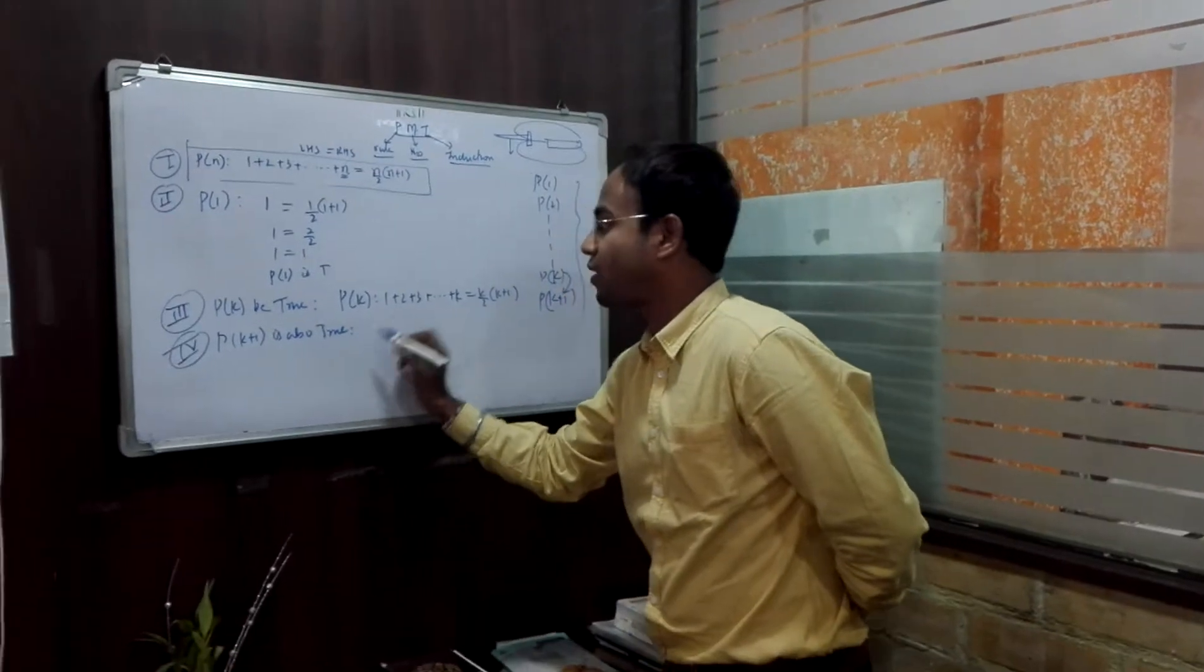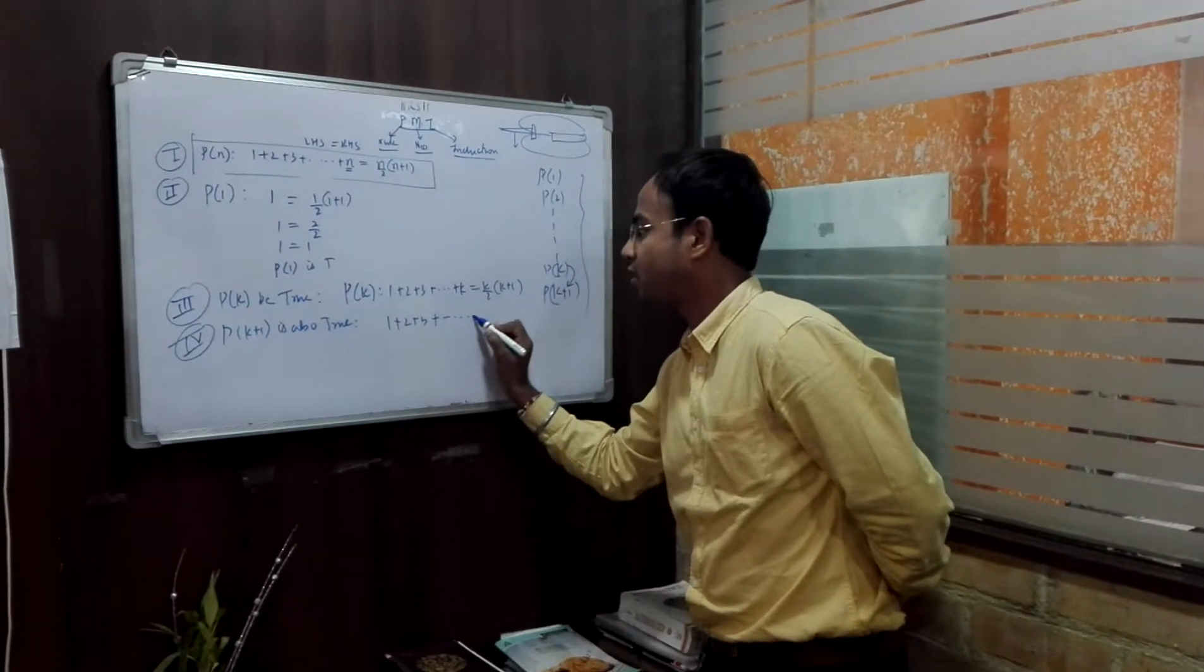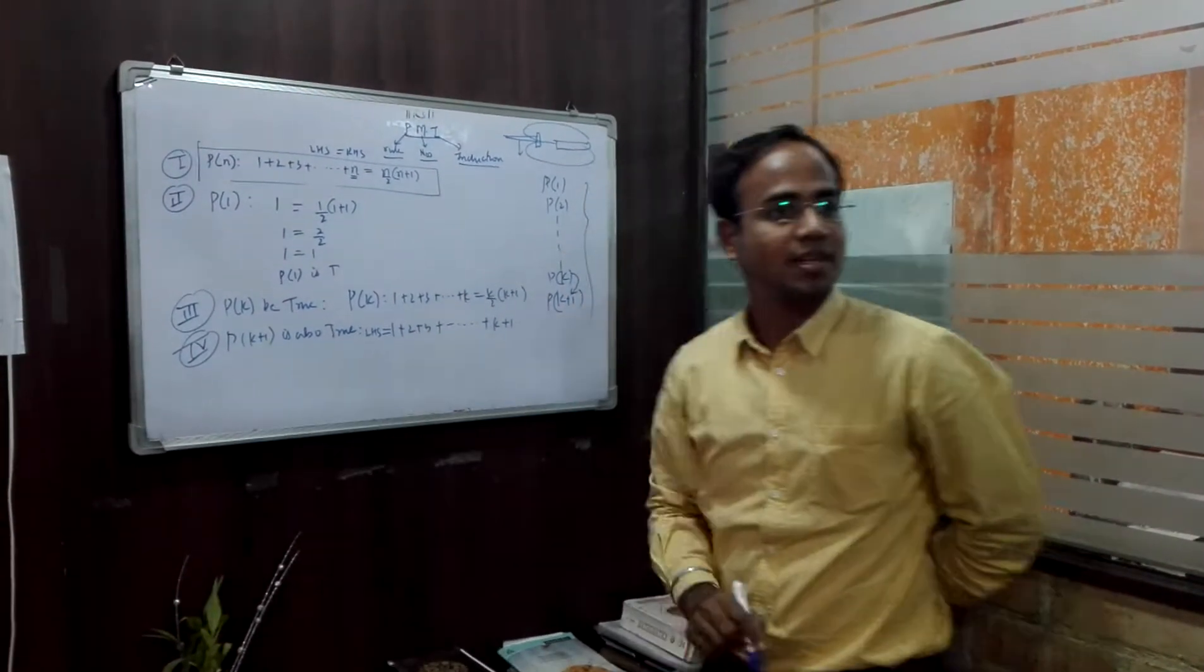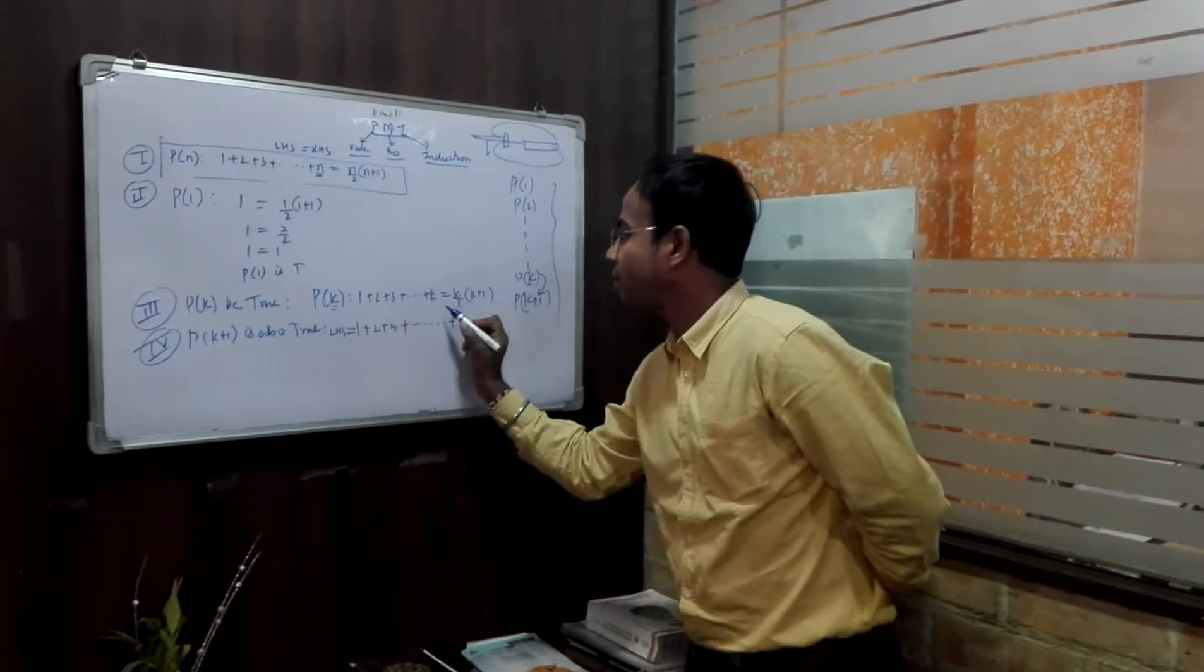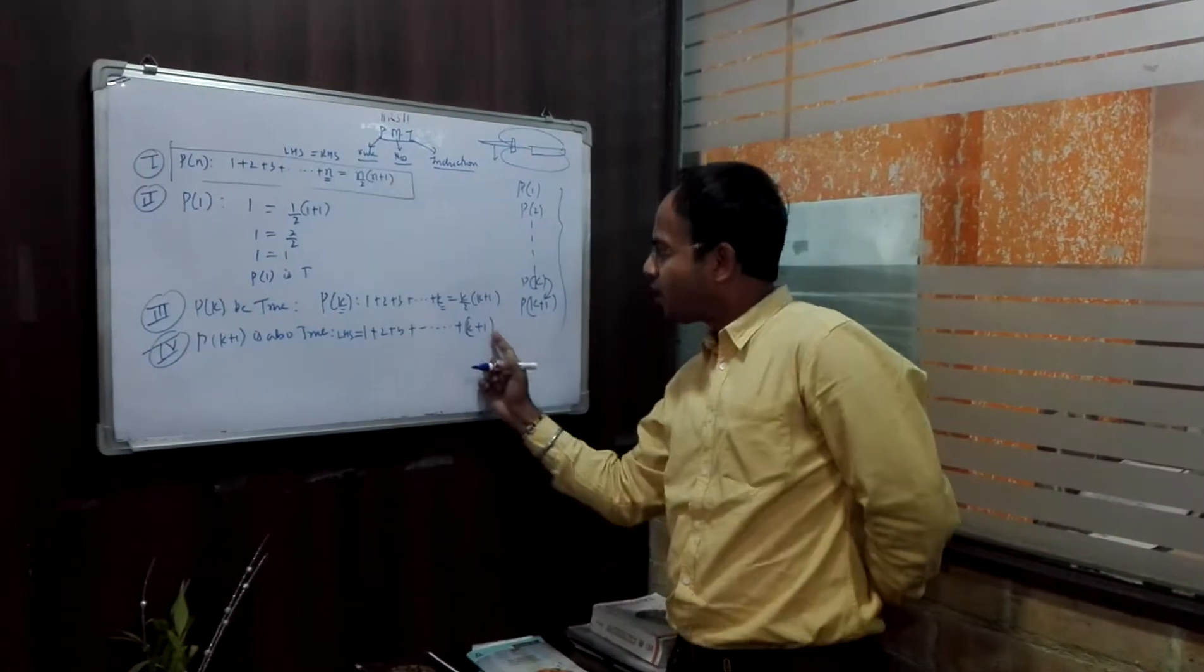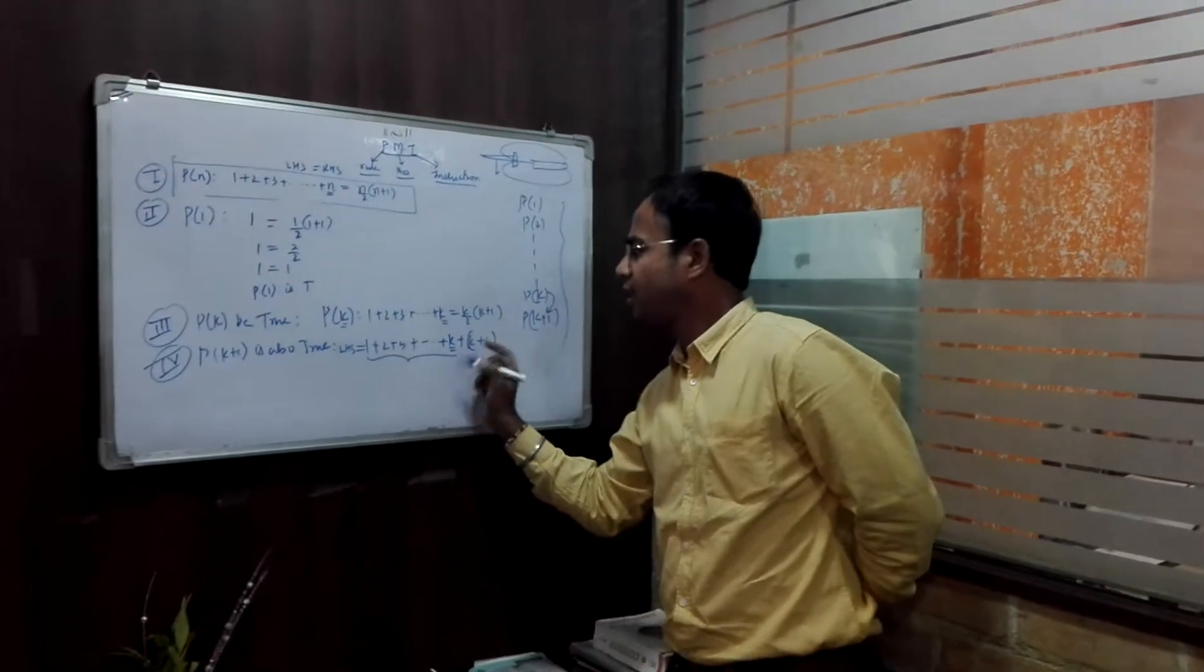To prove that, what am I going to try? 1 plus 2 plus 3 plus dot dot dot K plus 1. This will form LHS of K plus 1. Because when it was K, where would it be? K. When it is K plus 1, where would it be? K plus 1. K plus 1, just before, what would it be? K. The rule says that wherever it is K, you will use P(K).